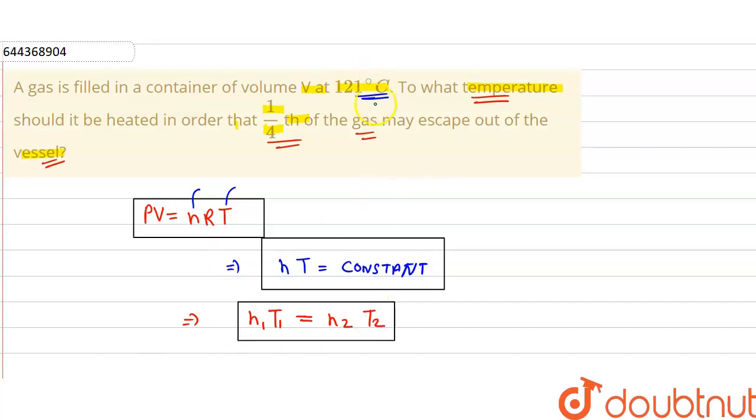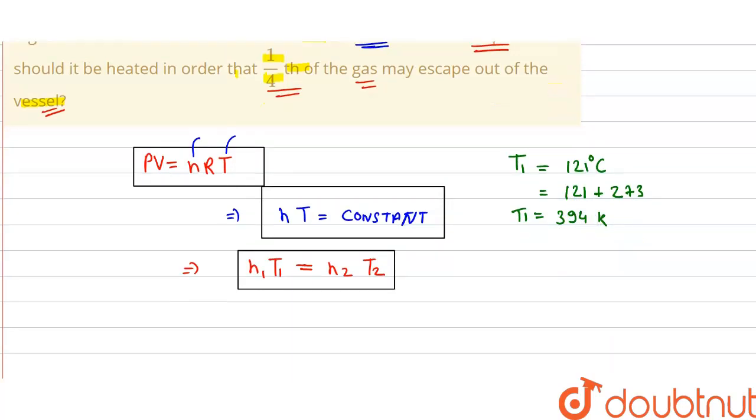Now here in the question our initial temperature T1 is given as 121 degrees Celsius. We can convert to Kelvin by adding 273, so 121 plus 273 gives us T1 equal to 394 Kelvin. We have to find the temperature T2.